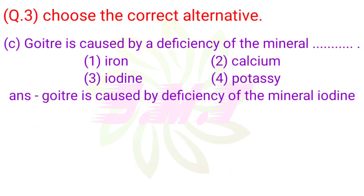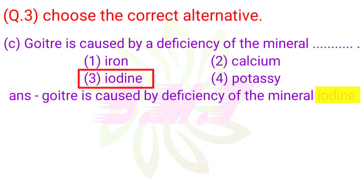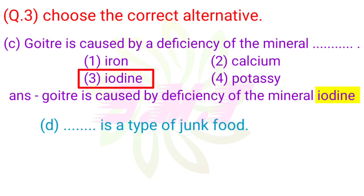C. Goiter is caused by a deficiency of the mineral: 1. Iron, 2. Calcium, 3. Iodine, 4. Potassium. Answer: Goiter is caused by a deficiency of the mineral iodine.